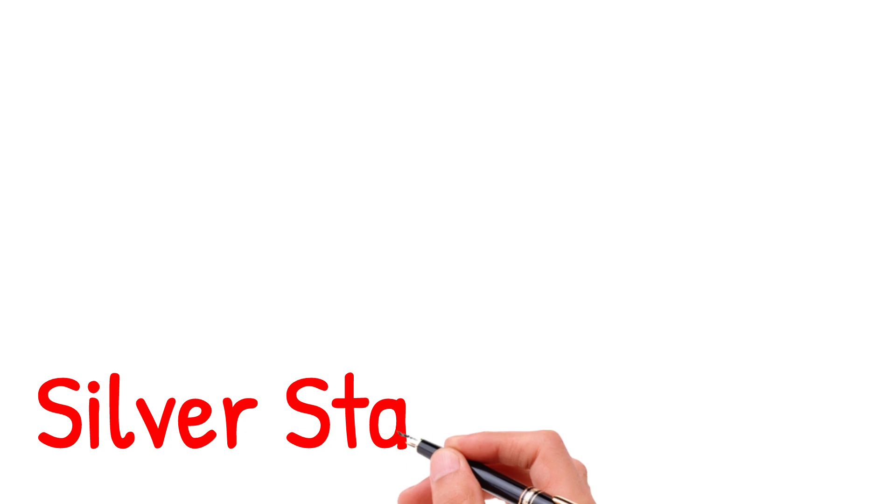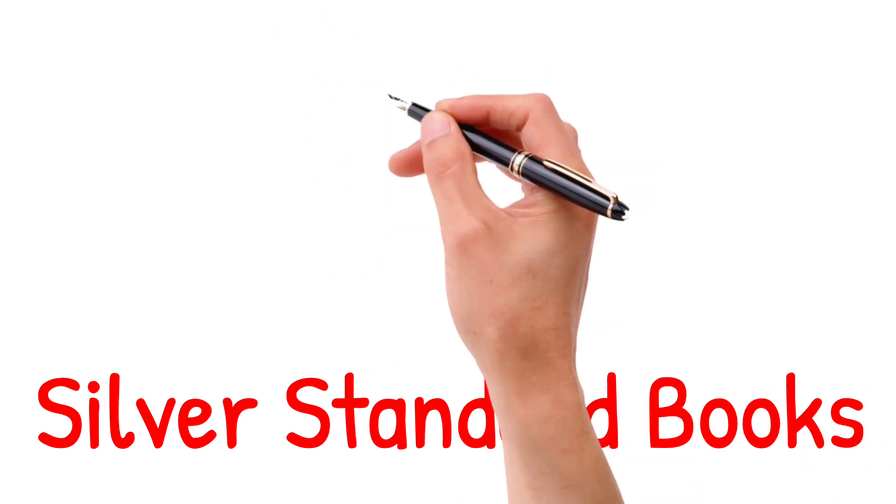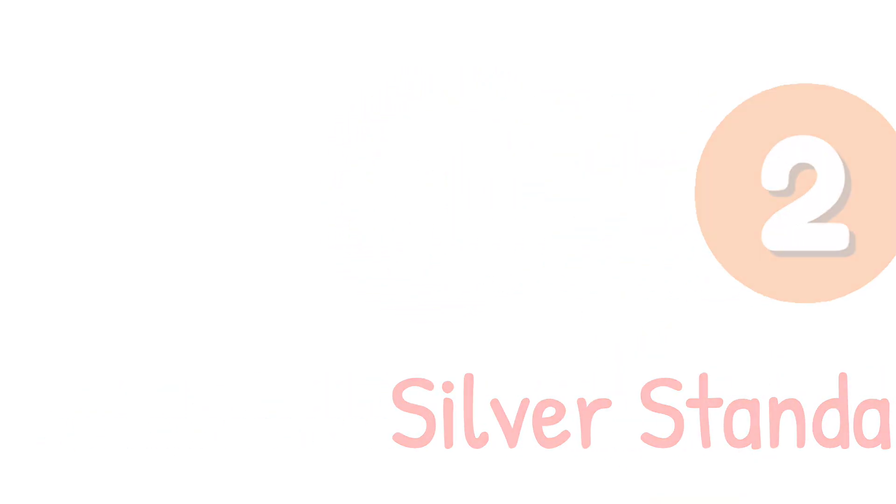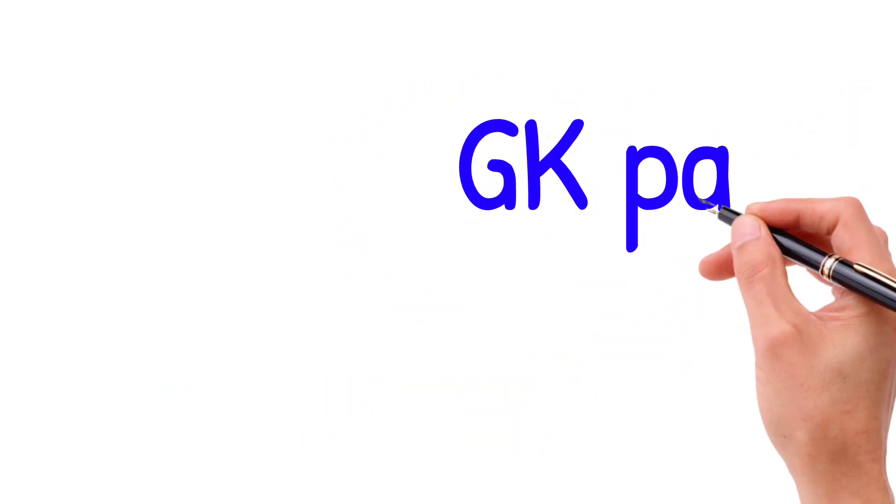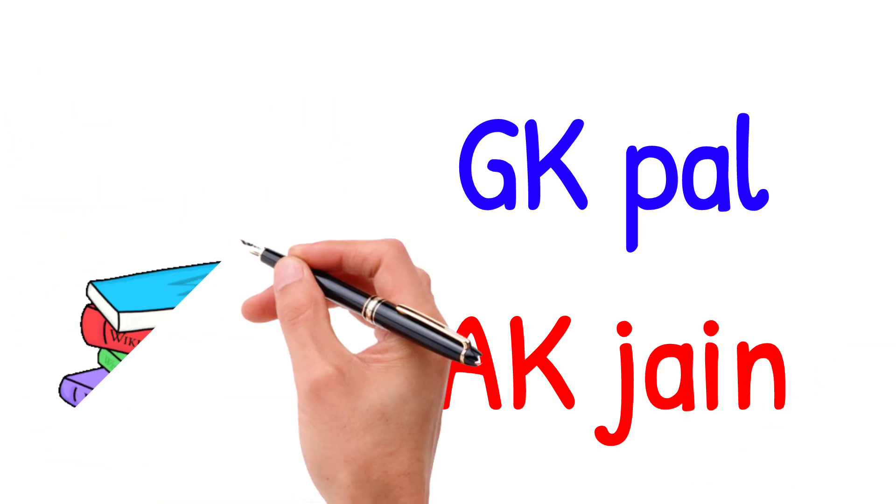The second standard are the Silver Standard books. These books are generally used for theory classes. They also contain each and every concept and are very well oriented. You can go for GK Paul and AK Jain for it.